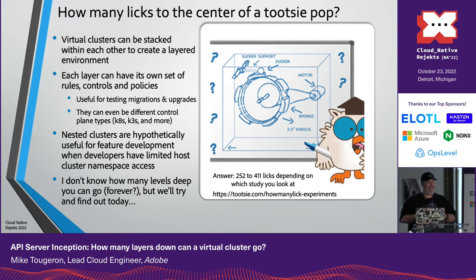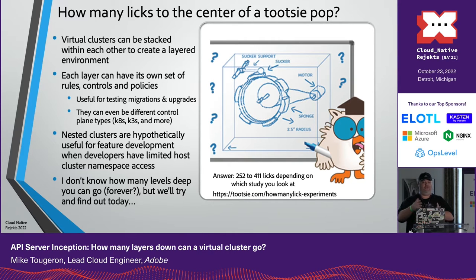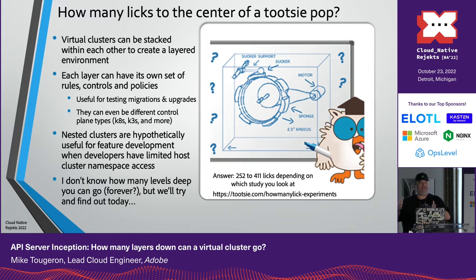That's useful for testing migrations. For example, a 1.21 to 1.22 migration — there are a lot of deprecations. You can launch a 1.22 cluster inside of a 1.21 cluster, a 1.22, 1.23, 1.24 inside of those. You could also test a downgrade — what would happen if I had a 1.22 cluster that I need to downgrade to 1.21 because my upgrade went FUBAR? You can test those up and down paths.